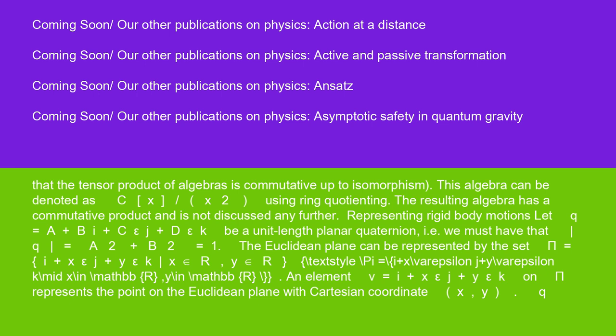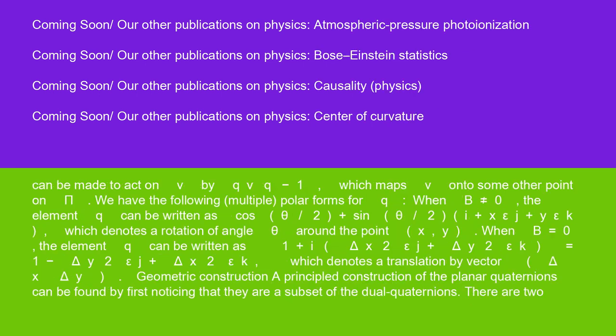Representing rigid body motions: Let Q equals A plus Bi plus C epsilon J plus D epsilon K be a unit length planar quaternion, i.e., we must have that |Q| equals sqrt(A^2 plus B^2) equals 1. The Euclidean plane can be represented by the set pi equals {i plus X epsilon J plus Y epsilon K | X in R, Y in R}. An element V equals i plus X epsilon J plus Y epsilon K on pi represents the point on the Euclidean plane with Cartesian coordinate (X, Y). Q can be made to act on V by QVQ^-1, which maps V onto some other point on pi.